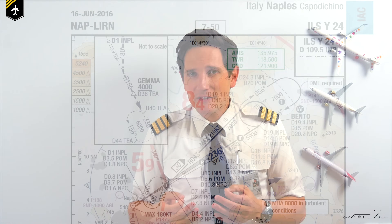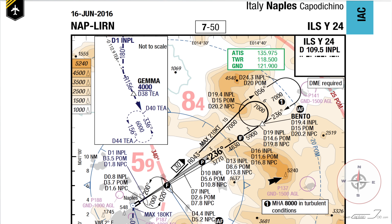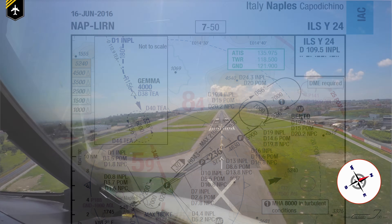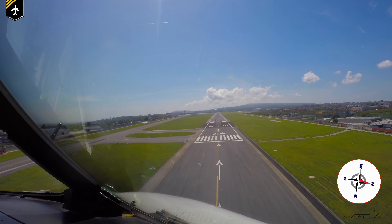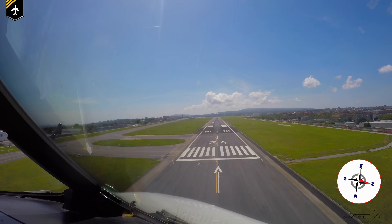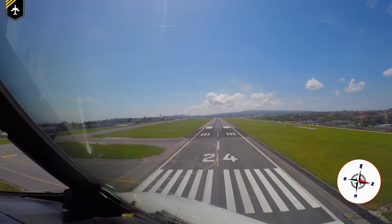Let's fly into Naples, Italy. As you can see on the approach chart, the final runway course, or magnetic heading, reads 236. So if you round off to the nearest tenth, that gives us runway 24.